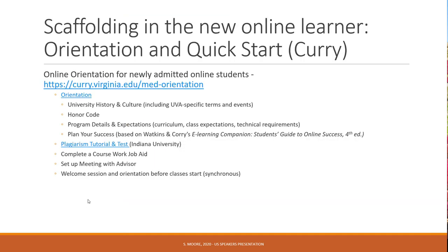This is an example of how we scaffolded in new online learners, where we provided them an orientation that included a quick-start guide — here are all the things you need to take care of, which might take a day or two to work through, with all the links and contact information for those resources. In the orientation, we went into some university history and culture because UVA has its own specific history, culture, terms, and special events, and we wanted our online students to feel every bit as much a part of that history and culture.